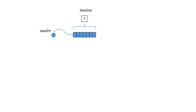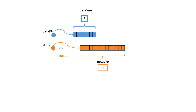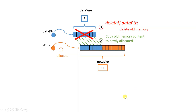You create a temporary pointer. In that temporary pointer, you allocate 14 things blank. After you do that, you bring everything from the old one into the new one — you copy everything from the old memory into the new one. You do a loop, start from zero, go all the way, copy everything in. Now all the data is copied. I don't need the old one anymore, so I wipe the old one out. When you wipe the old one out, that data pointer is pointing to some garbage place. It's not yours anymore. This is the important place that temp is pointing to right now.